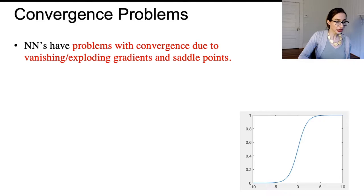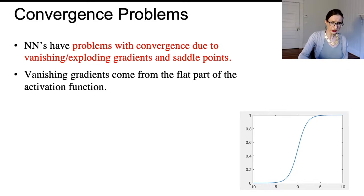Vanishing gradients come from the flat part of the activation function. If you're in part of the space where the activation function is either zero or one, the gradient is very minimal and so you don't know which direction to go to try to minimize the loss function, and that can really be a problem.